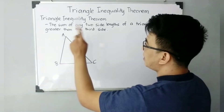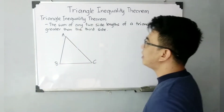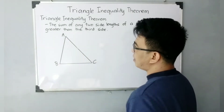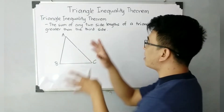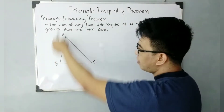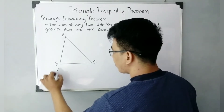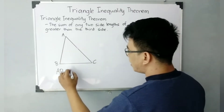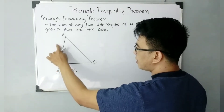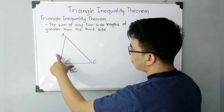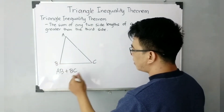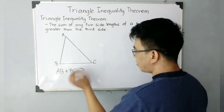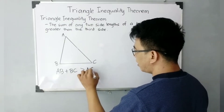It states that the sum of any two sides of a triangle is greater than the third side. So let's say for example, I have here Triangle ABC. Let's look at what is meant by this theorem. We have here side AB plus side BC — the first and second side. The sum of these two sides is greater than the measurement or the length of the third side, which is AC.